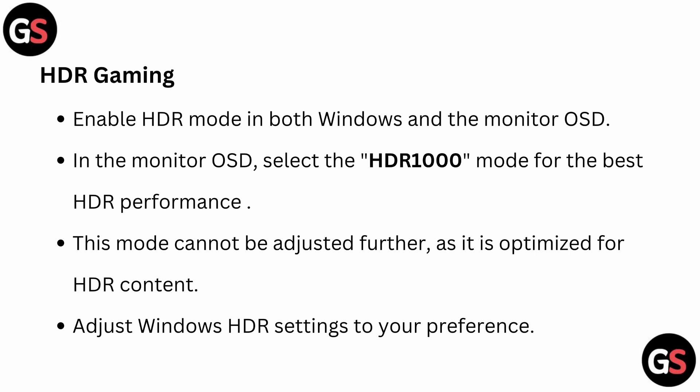For HDR gaming, enable HDR mode in both Windows and the monitor OSD. In the monitor OSD, select HDR 1000 mode for the best HDR performance. This mode cannot be adjusted further as it is optimized for HDR content, but you can adjust Windows HDR settings to your preference.